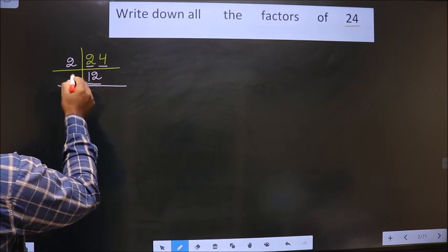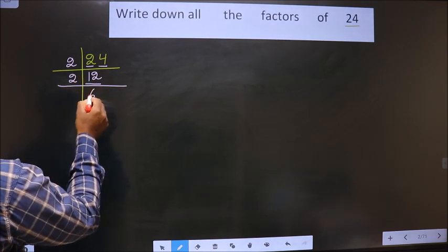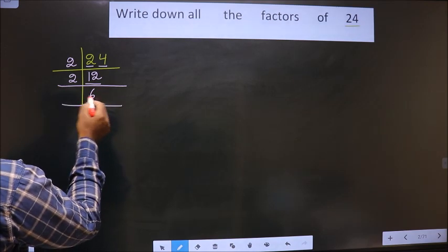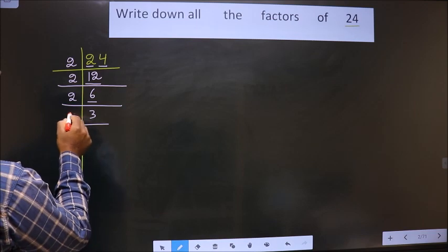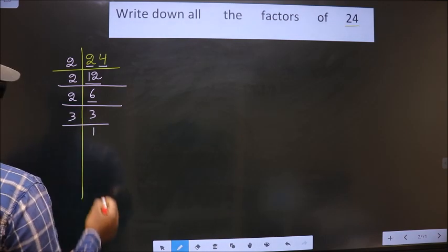Now here we have 12. 12 is nothing but 2×6 is 12. Now 6, 6 is nothing but 2×3 is 6. Now 3 is a prime number, so 3 and 1.